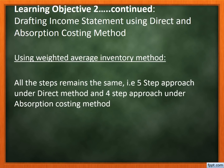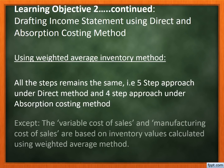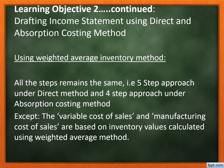All the steps remain the same. The five-step approach under the direct method and the four-step approach under the absorption costing method would remain the same. The only exception is that the variable cost of sales under the direct method and the manufacturing cost of sales under the absorption method will be based on inventory values calculated using the weighted average method.